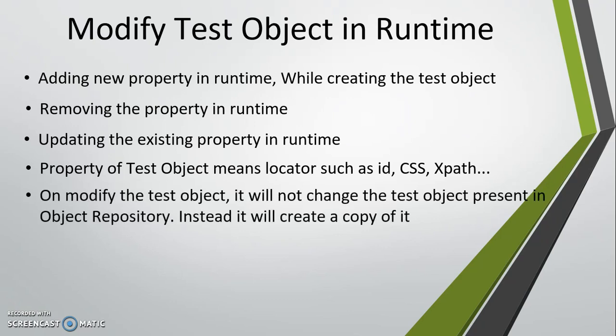The important thing to keep in mind is that when you modify a test object property during runtime, it will not affect the test object saved inside the object repository. Instead, it will create a copy of the test object — a copy of the modified version of the test object.